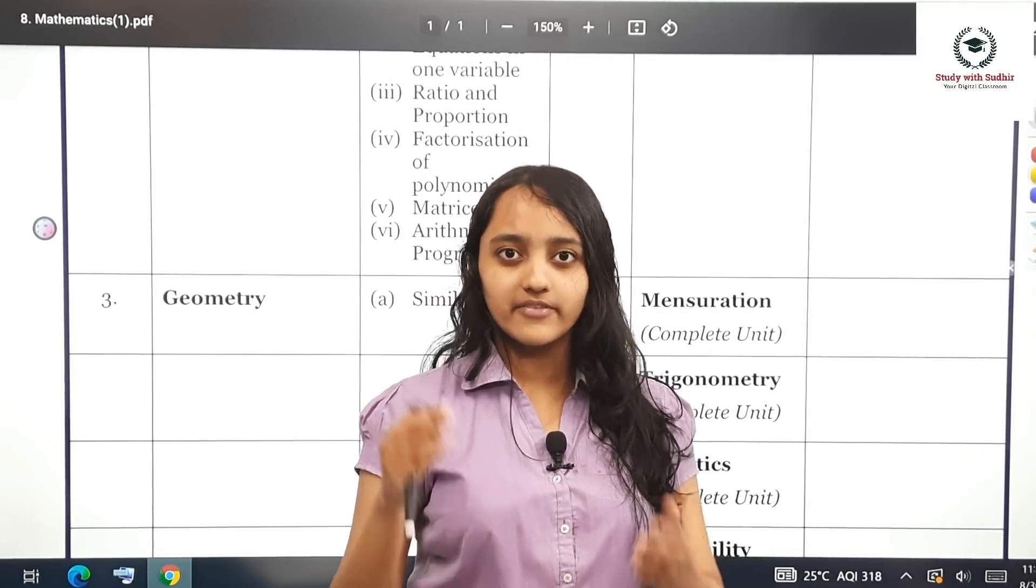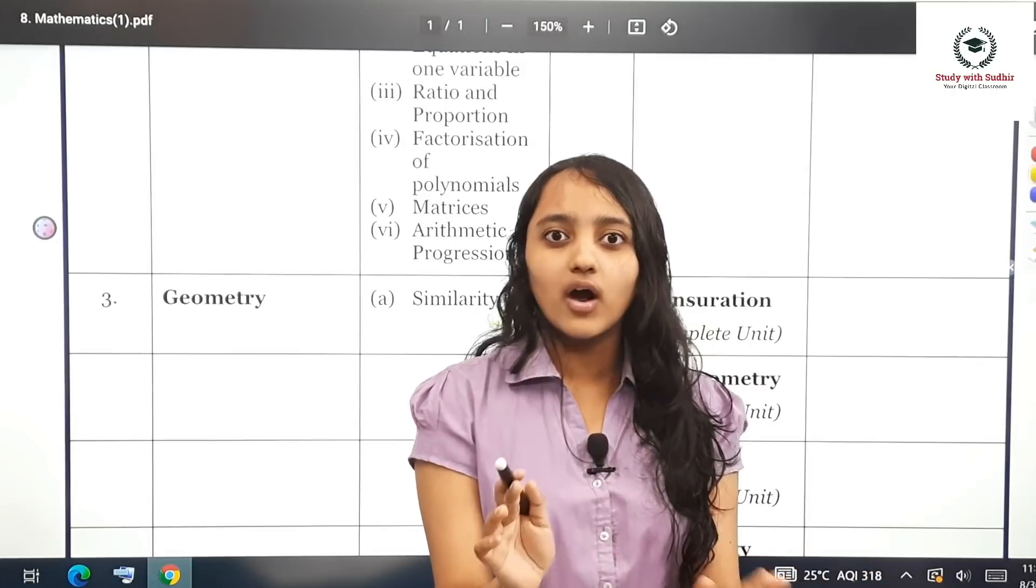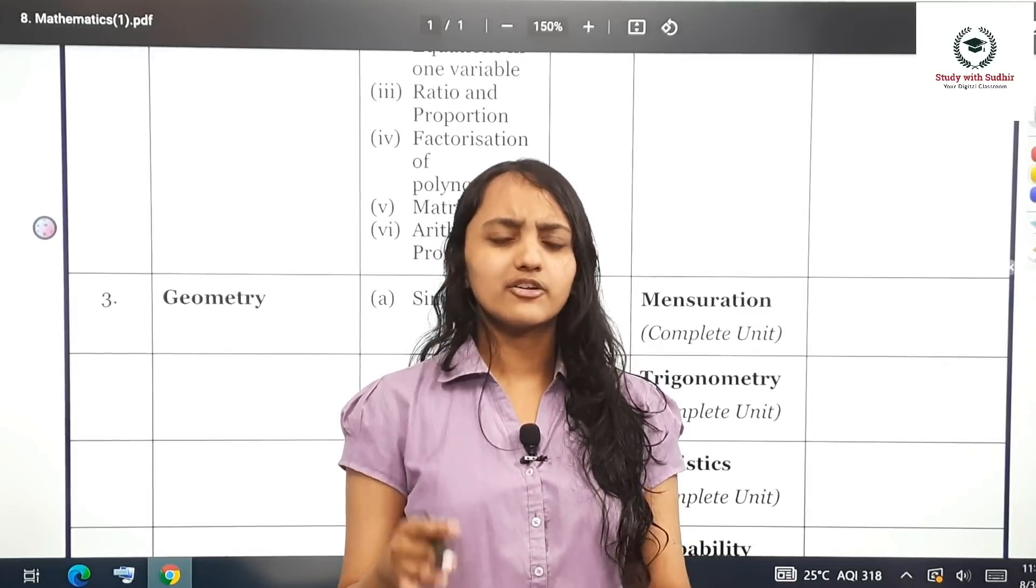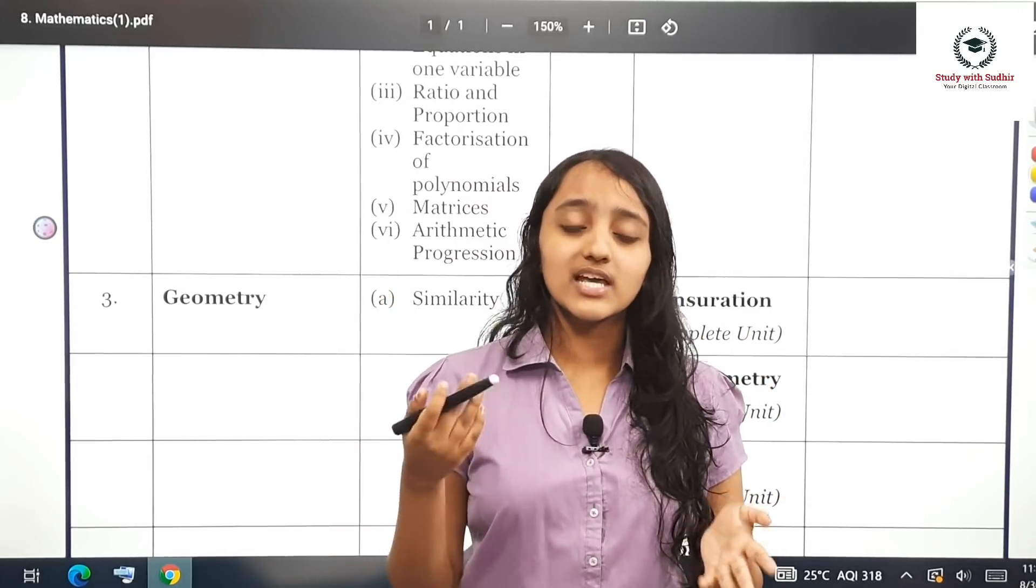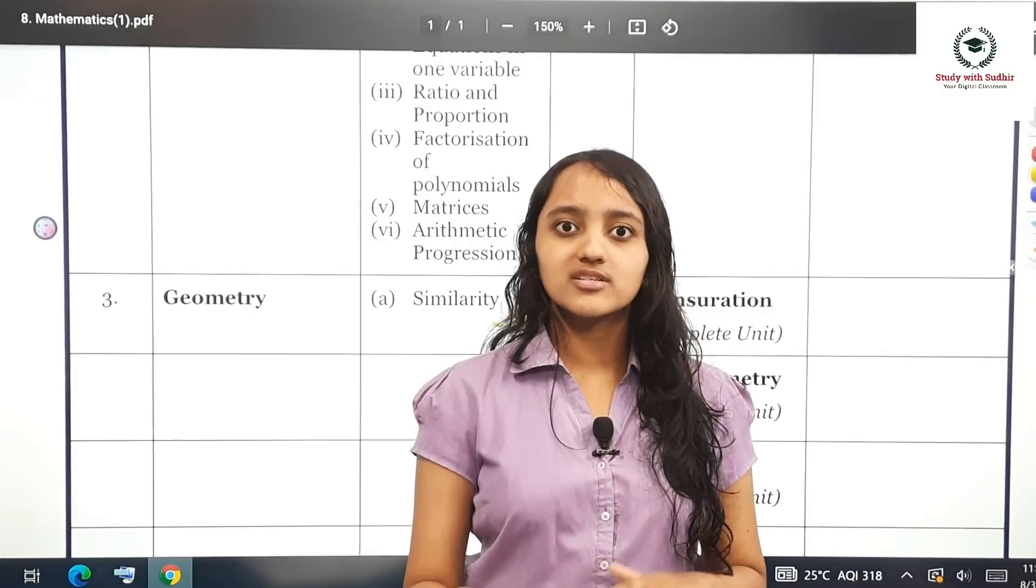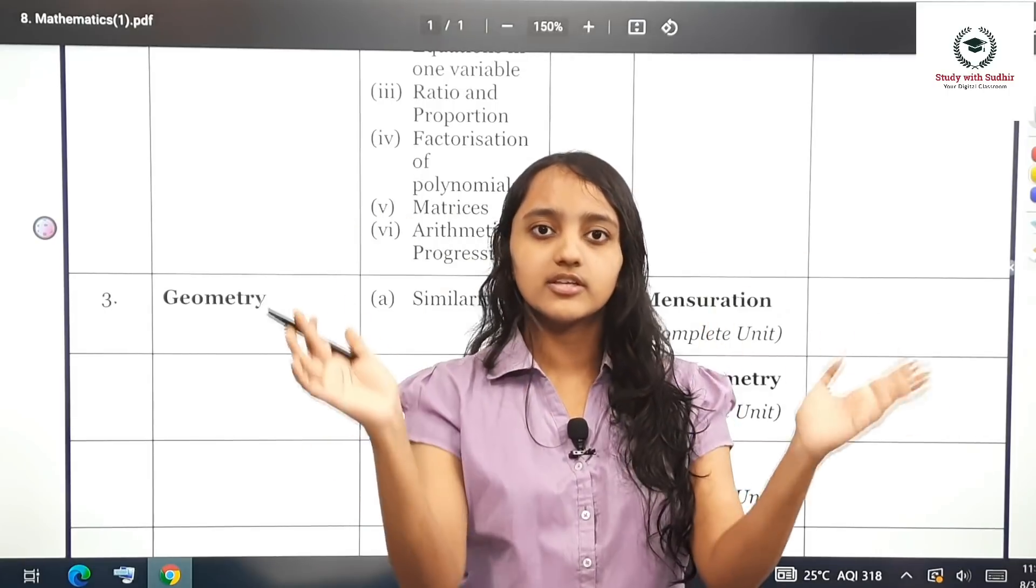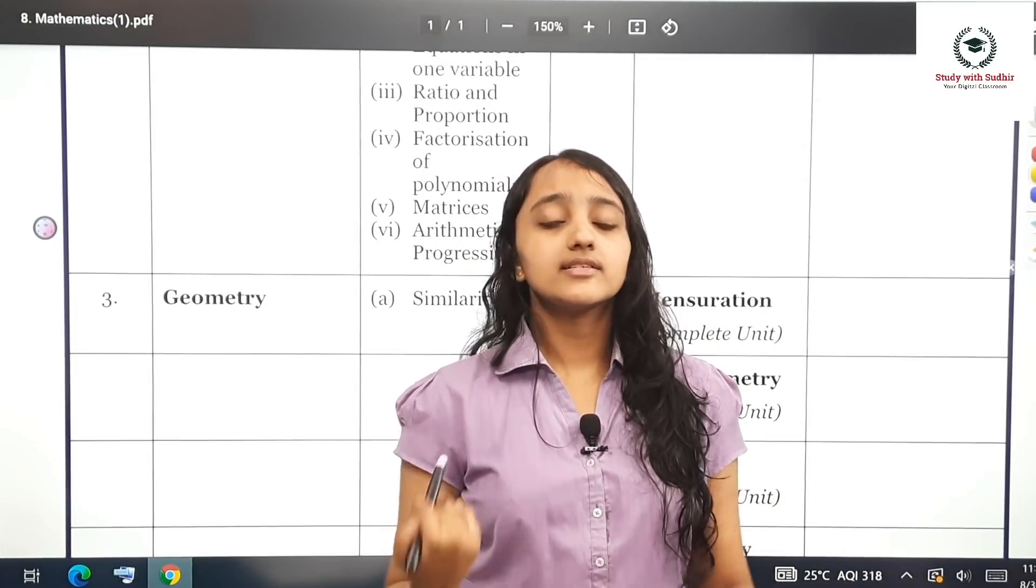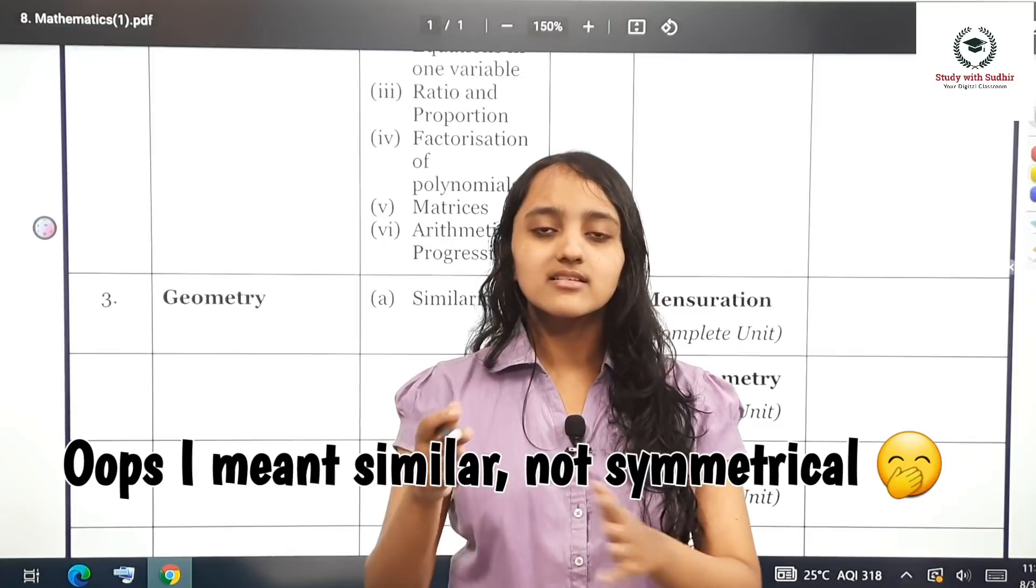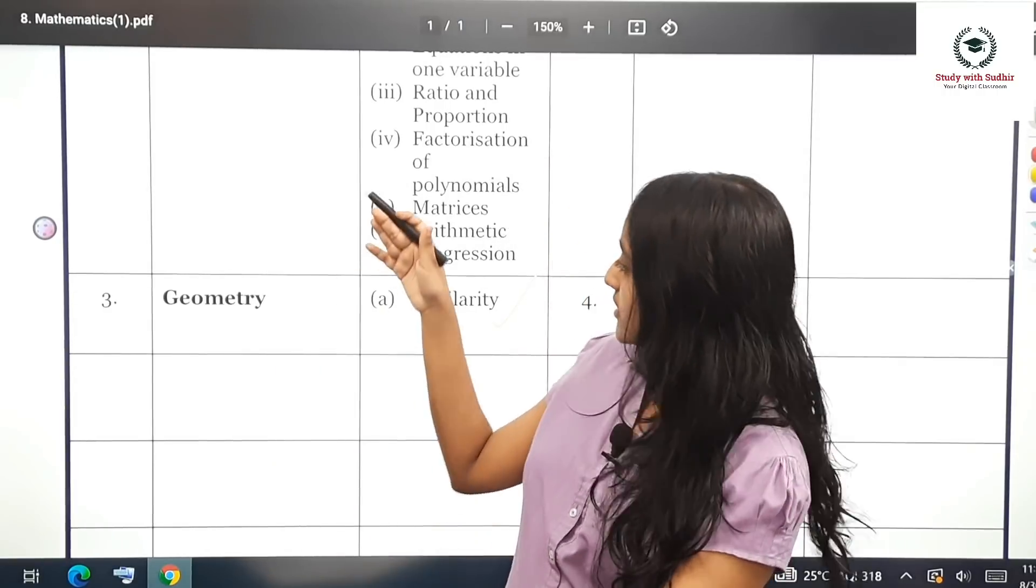Unlike before when it was not MCQ based, where we had to write a statement for every step, you don't need any of that now. You just need to have understanding. You save so much time because you don't need to write all the statements. You may be asked which triangle is similar to another or which axiom does it follow: AAA, SAS, or SSS. It's all in your mind. You just need understanding and you will do great.